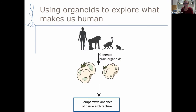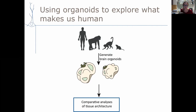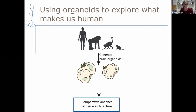Now switching gears back to the big question of what makes our brains special, and how we're using brain organoids to understand this — which brings us full circle to questions about what makes us human and consciousness.